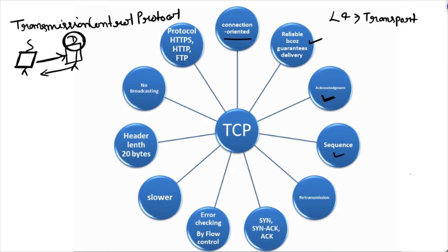In TCP, sequence numbers are maintained so that data transmission is not interrupted. For example, if the source has sent 10 packets to the destination but the destination received only 5 packets, meaning 5 packets were dropped, TCP will retransmit those 5 dropped packets to the destination.